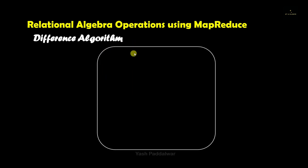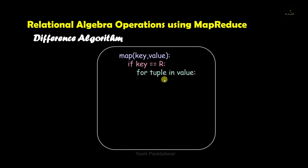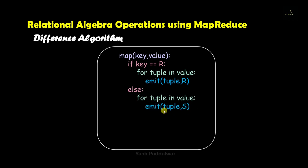The algorithm will include two major tasks. The first task will be the Map task. Under the Map task, first we will check whether the current key is from the first relation R, that means table 1. If yes, we will iterate over all the values and store each current value in the variable tuple, then emit the key-value pair as (tuple, R).